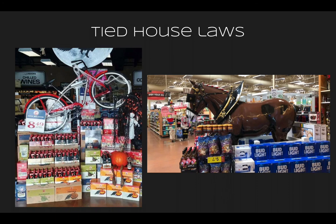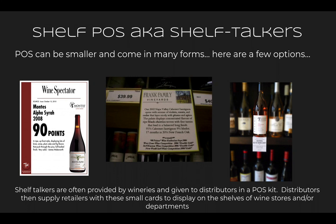Moving on to what is known as shelf POS or shelf talkers — these are really just wine tasting notes. We looked at them taped to a chopstick or skewer and stuck inside a display; you also see them taped to the shelf itself. These are accolades or descriptors to help a customer make a purchase. A lot of times distributors will supply a retailer with what's known as a POS kit, which comes with several different forms of POS — maybe a couple of display racks, a series of shelf talkers, and some additional elements. This is typically part of a well-rounded POS kit.